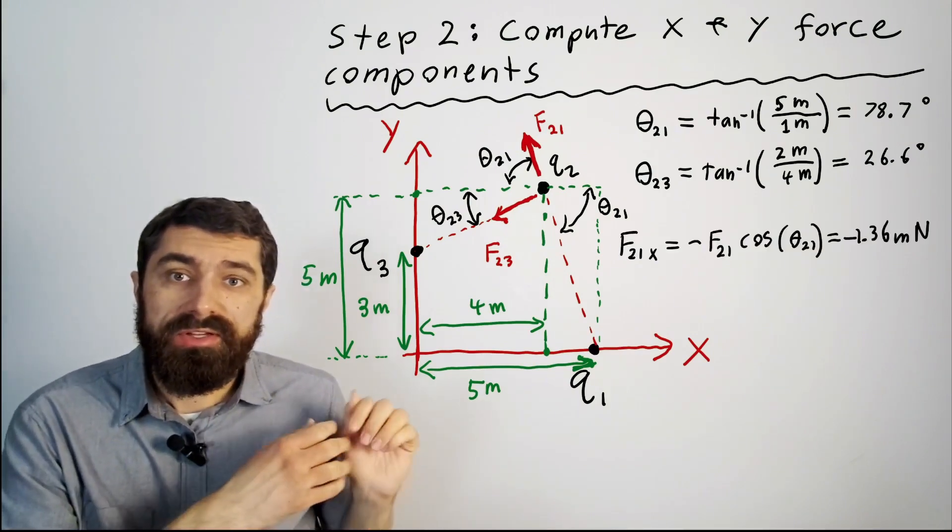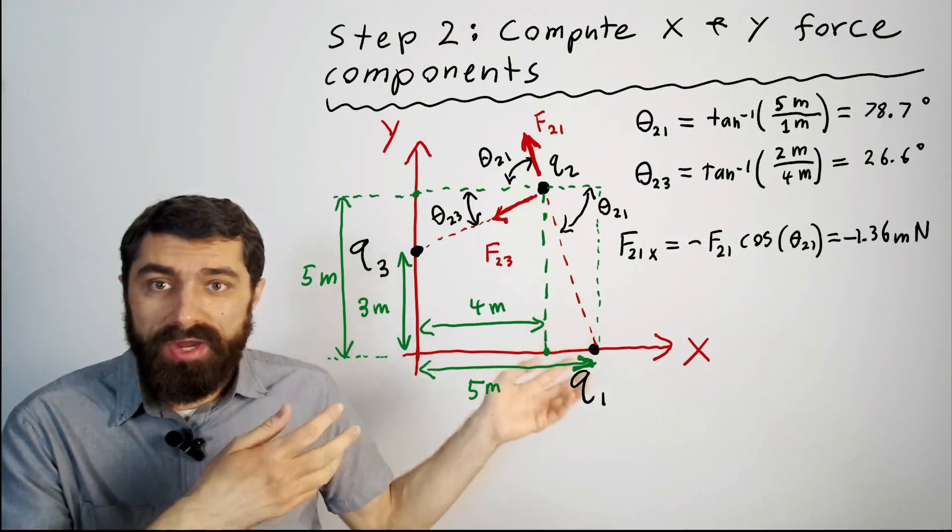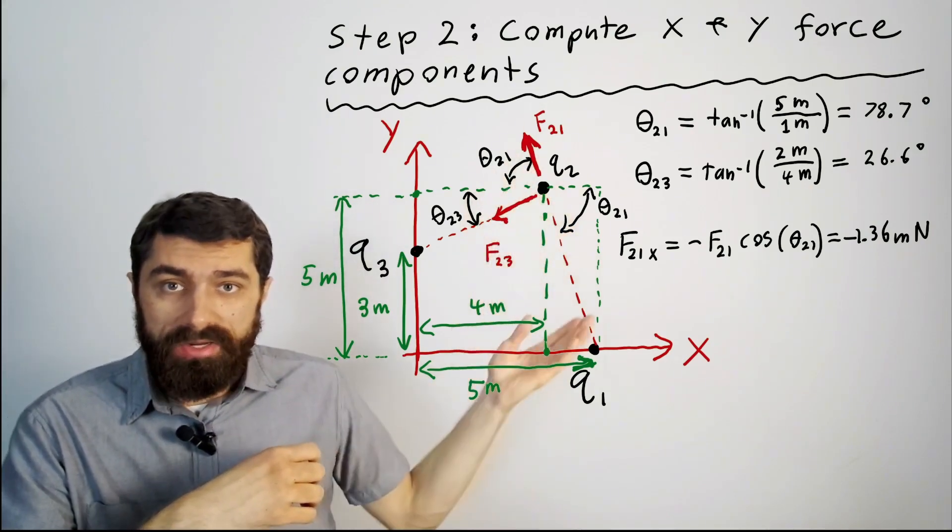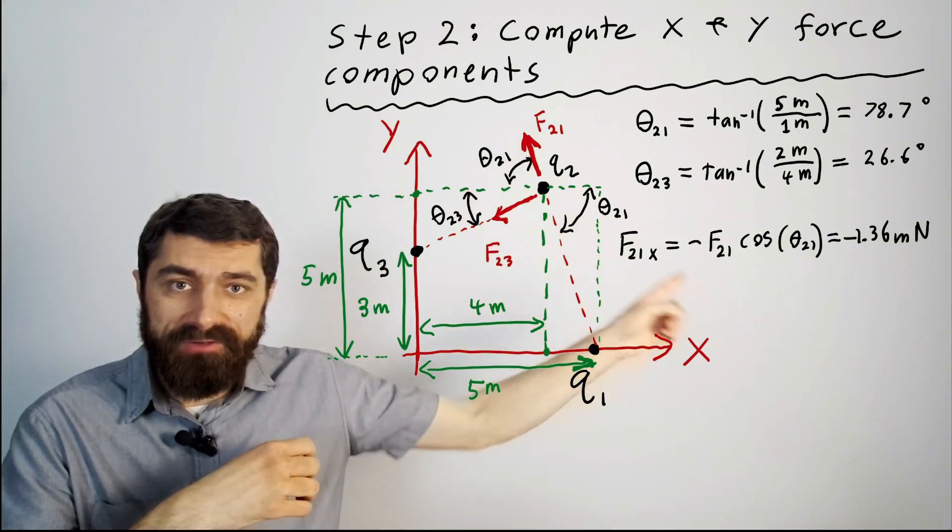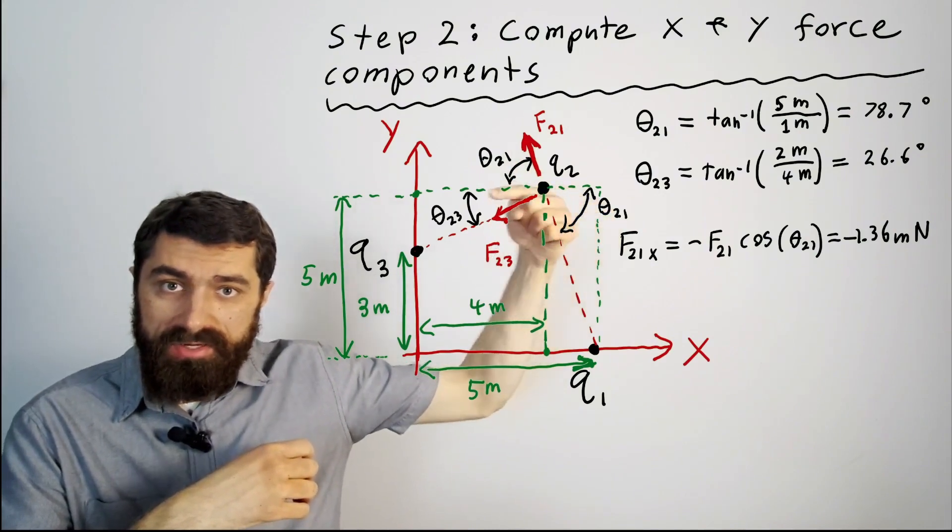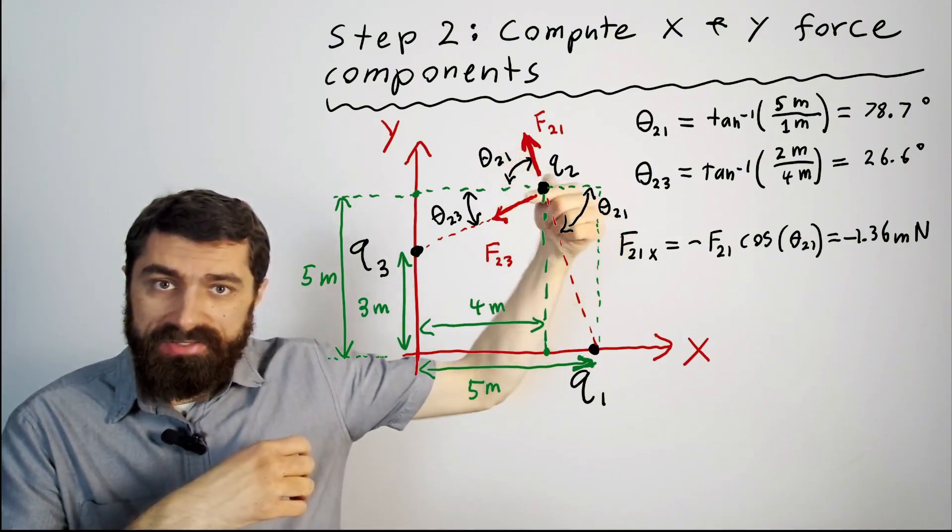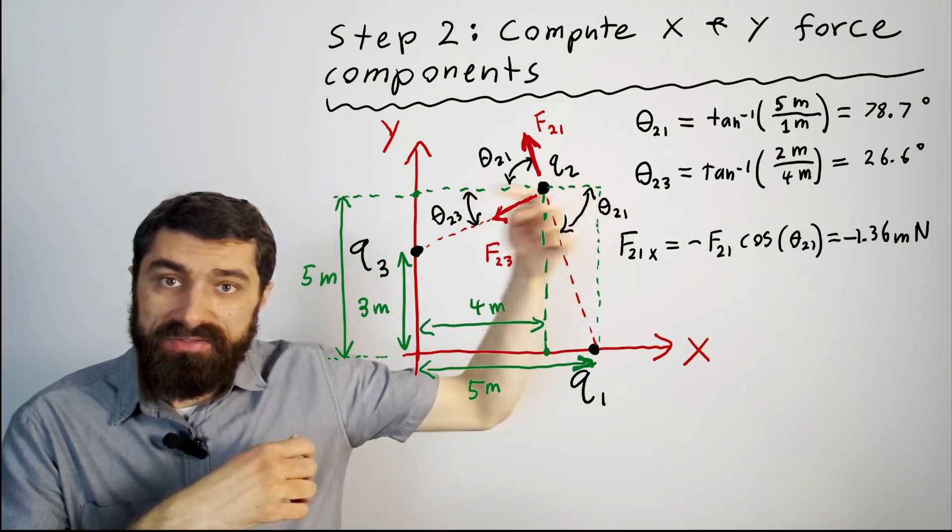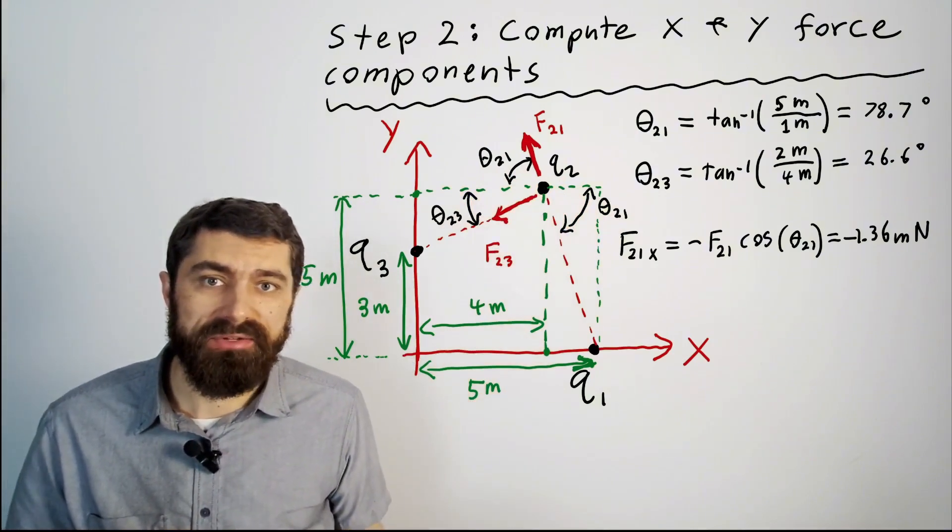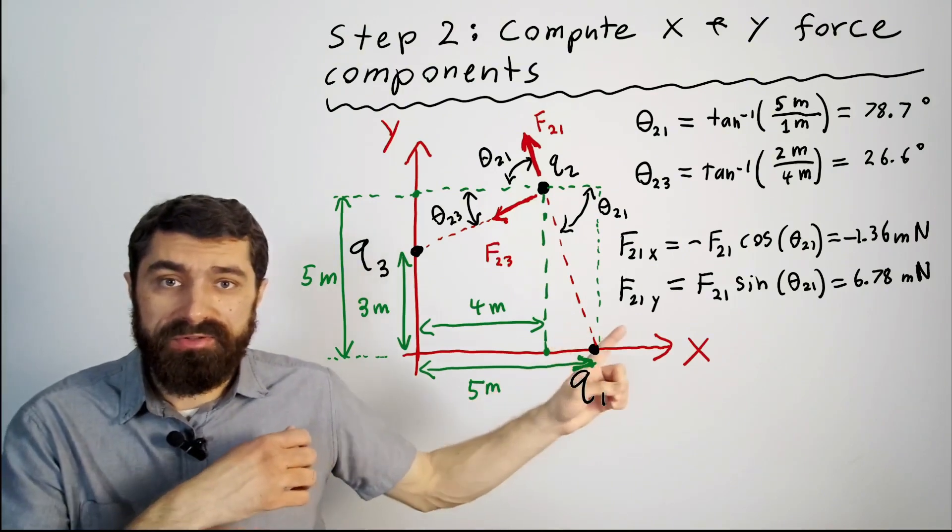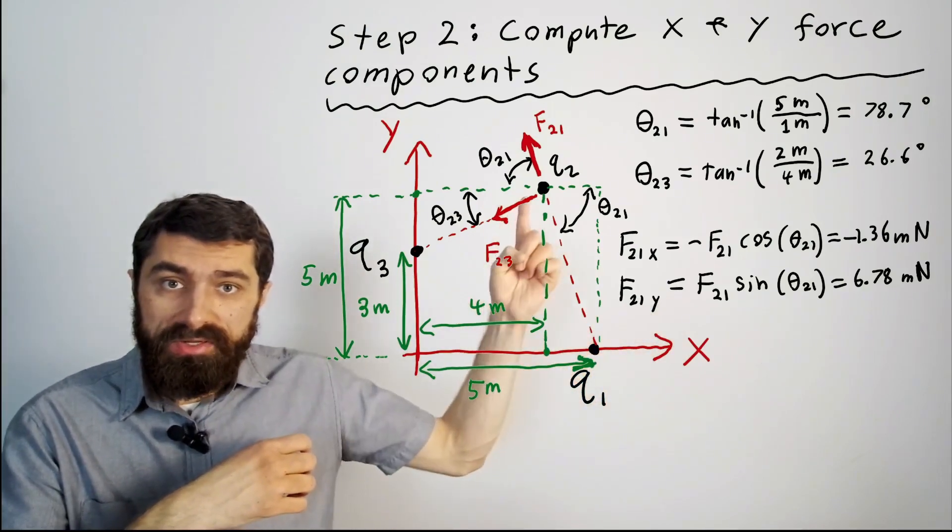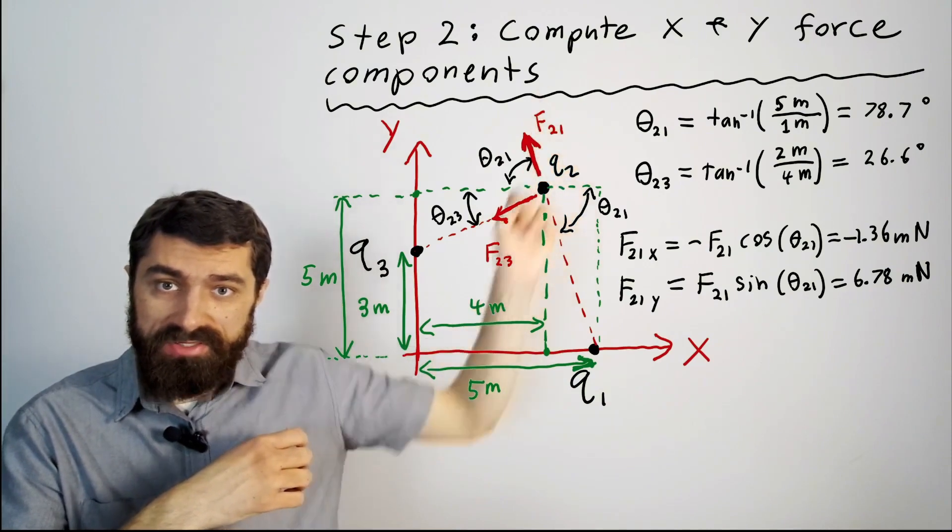All right so then we can use geometry to calculate the x and y components of the force. So let's say we want to find the x component of f21. Well that would just be minus f21 times the cosine of this angle here. It's minus because we know that based on how this is angled that the direction of this force is going to be in the negative x direction. So I get negative 1.36. And in a similar manner you can also do the same thing for f21y except now you've got sine of theta 21 and it's going to be positive because we know it's oriented up there.